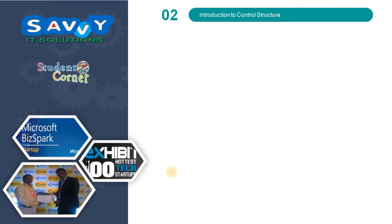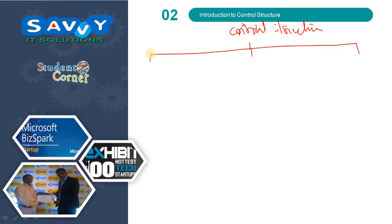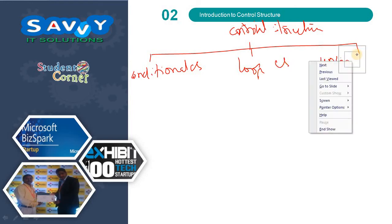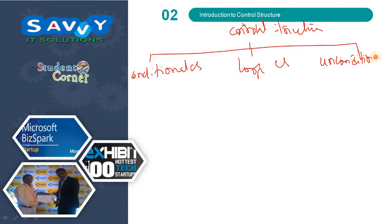Now, the types of control structures. Control structures are classified into three types: conditional control structure, loop control structure, and unconditional control structures. The first problem — skipping from statement to statement — is solved by conditional control structures. Group of statements run repeatedly is solved by loop control structures. Breaking or terminating a block of statements is handled by unconditional control structures.